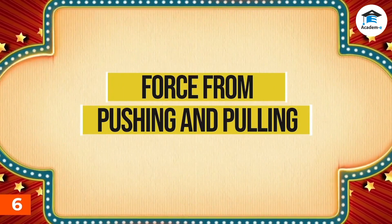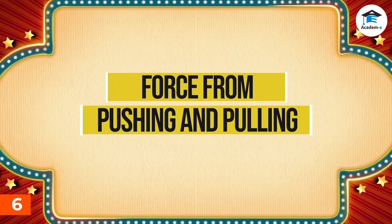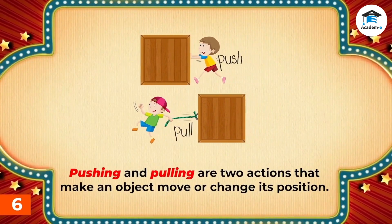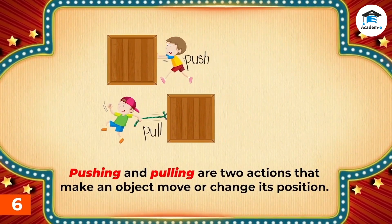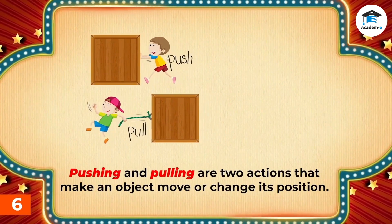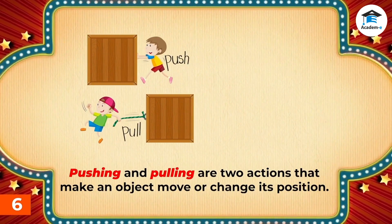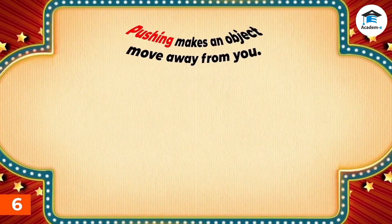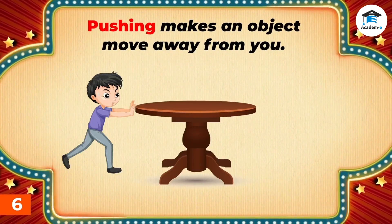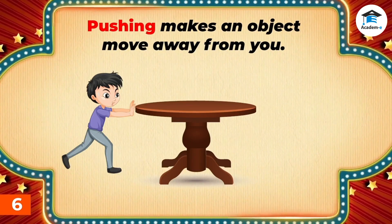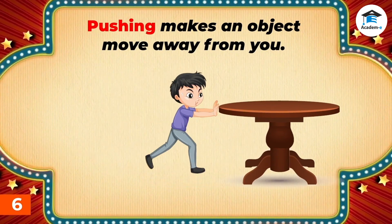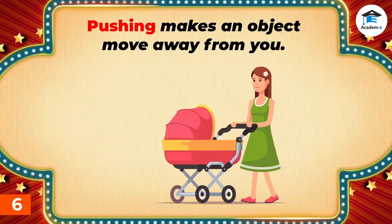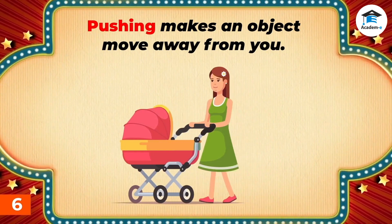Force from pushing and pulling. Pushing and pulling are two actions that make an object move or change its position. They can also stop an object from moving. Pushing makes an object move away from you. For example, when you push a table or chair, you make it move away from you. When you push a baby stroller, you make it move forward.